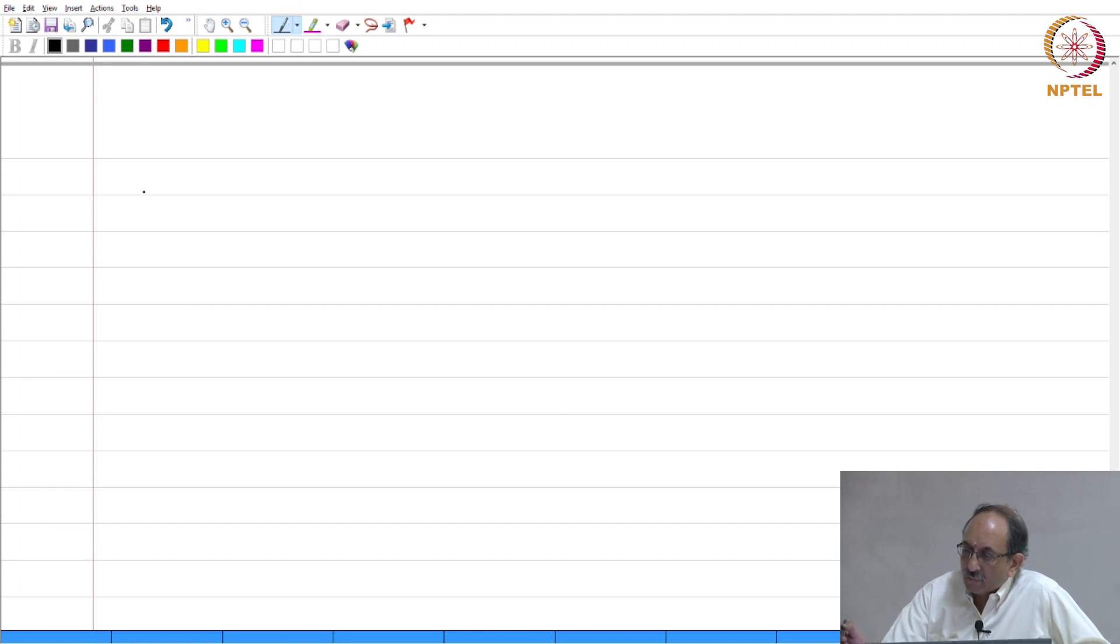And the final method for finding the inverse Z transform is the dreaded contour integral.